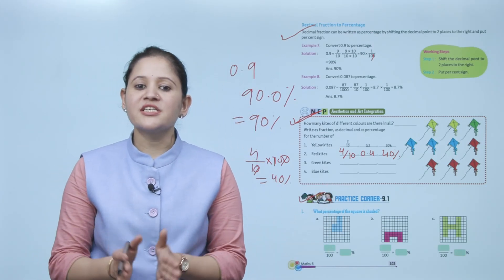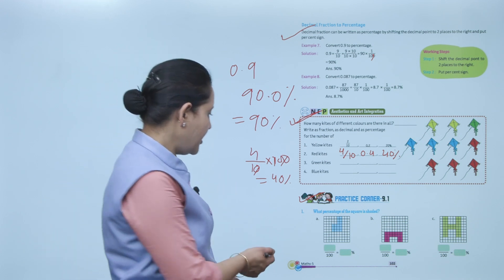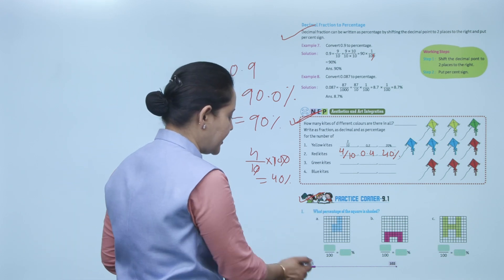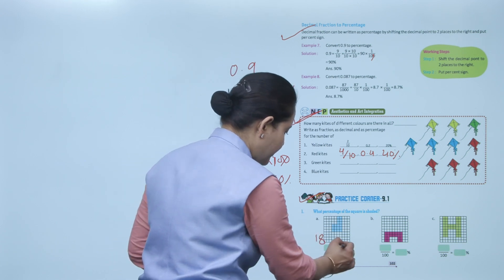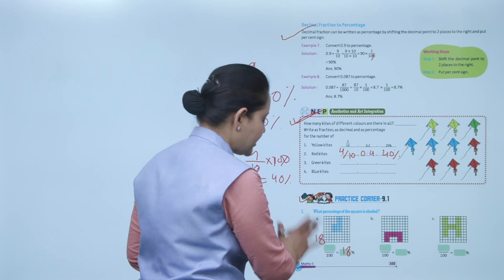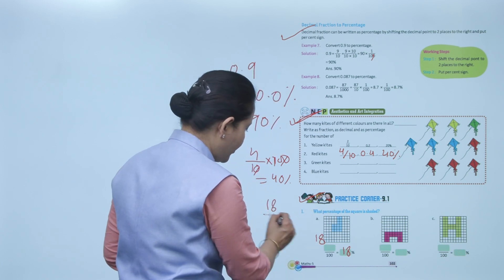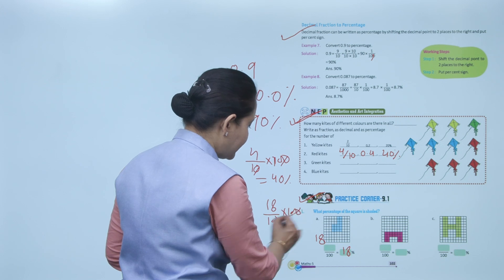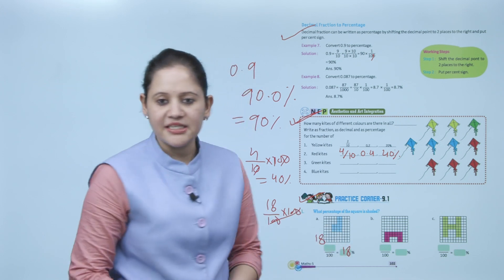Practice corner 9.1: what percentage of squares are shaded? The total number of squares is 100, out of which 18 are shaded. So the percentage is 18% because 18 out of 100 are shaded — 18/100 × 100 = 18%.